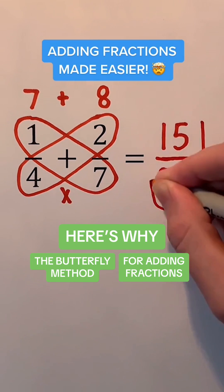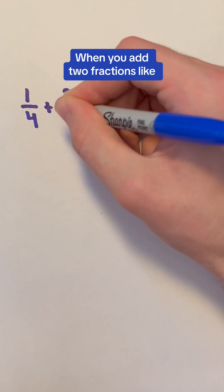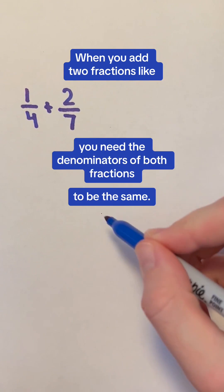Here's why the butterfly method for adding fractions works. When you add two fractions, like 1/4 and 2/7, you need the denominators of both fractions to be the same.